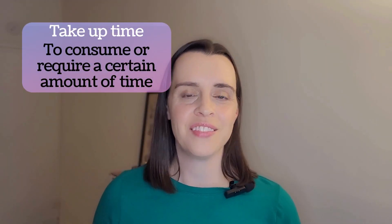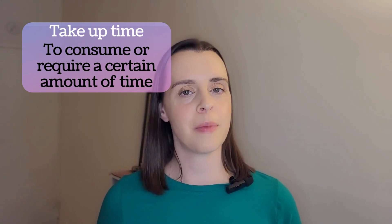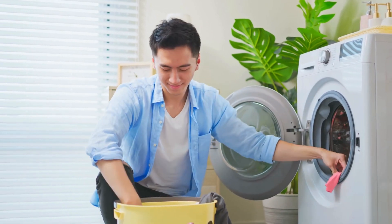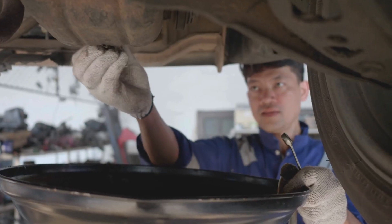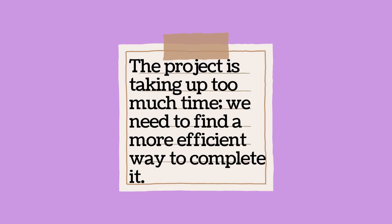Number five is to take up time. This means something requires a certain amount of time, and sometimes it's used when we spend too much time doing something. Like doing the laundry takes up a lot of time, or getting your oil changed also takes up time. Example: the project is taking up too much time — we need to find a more efficient way to complete it.